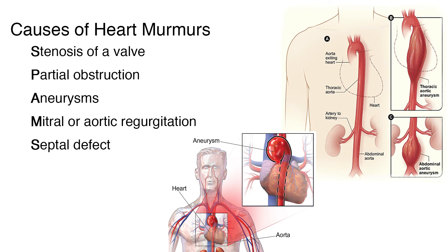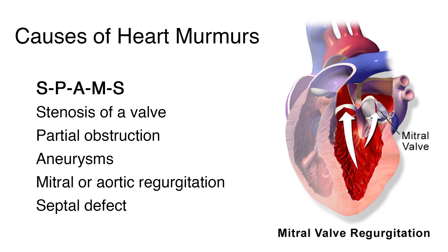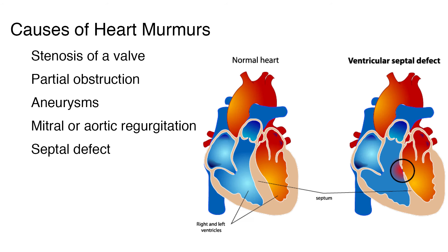M for mitral or aortic regurgitation — this is when blood is leaking backward through the mitral or aortic valve. The heart has to work harder to force blood through the damaged valve, and over time this can weaken or enlarge the heart, leading to heart failure. S for septal defect — a hole in the septum that separates the ventricles or the atria.